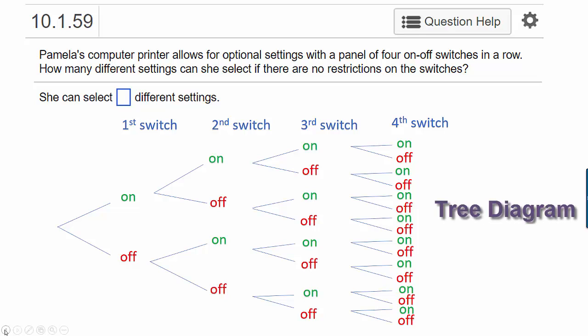What I've just constructed is called a tree diagram, and a lot of times students have trouble reading tree diagrams. What you want to do is recognize that the ends of each of these branches represents one scenario. Notice that we ended up with 16 possibilities under the category of fourth switch.